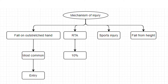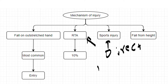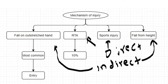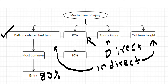Regarding mechanism of injury, there can be direct trauma — like a road traffic accident or sports injury — or indirect trauma, such as a twisting injury from a fall on an outstretched hand or fall from height. The most common mechanism is fall on an outstretched hand, constituting about 80% of all shaft humerus fractures. Road traffic accidents account for about 10%, and sports injury and fall from height account for the remaining 10%.